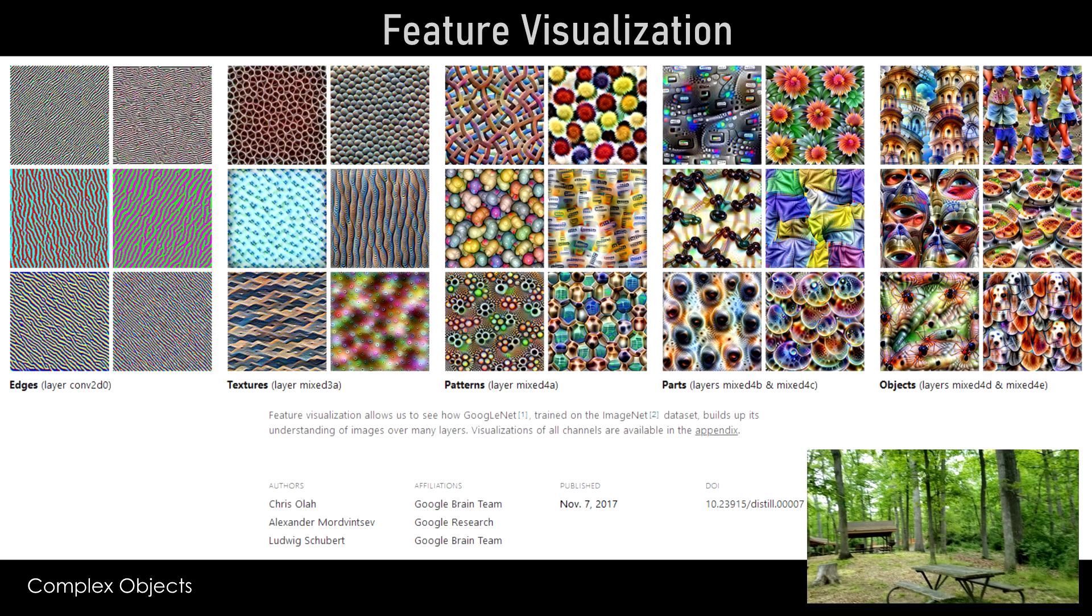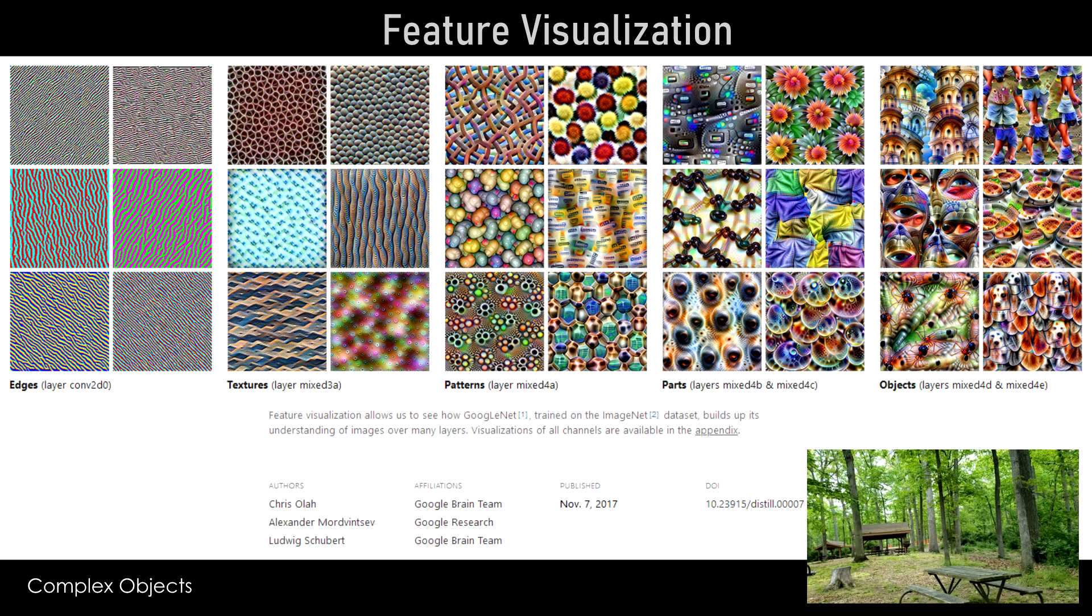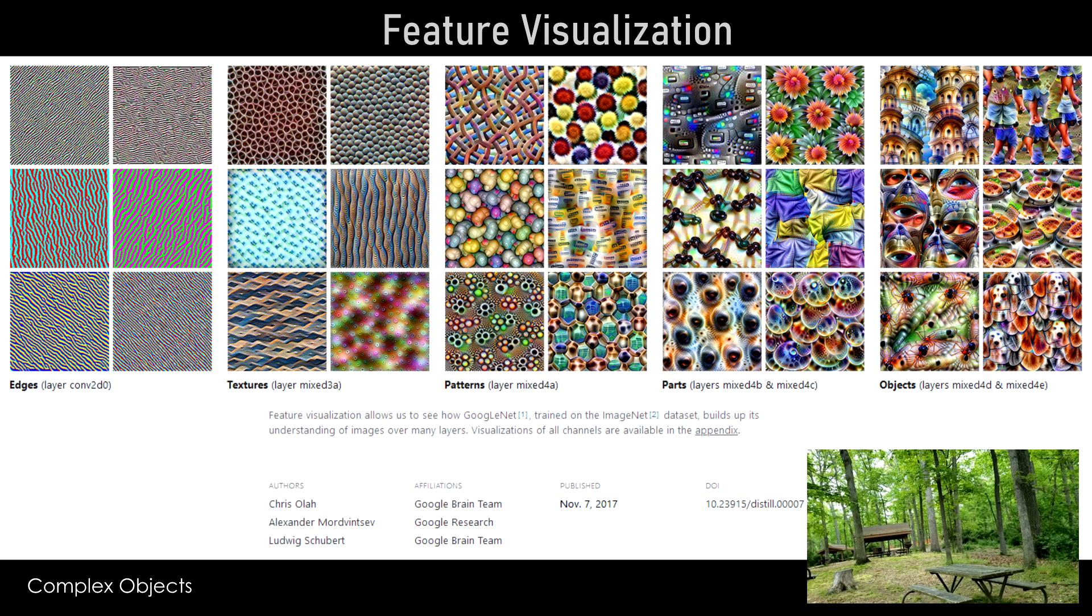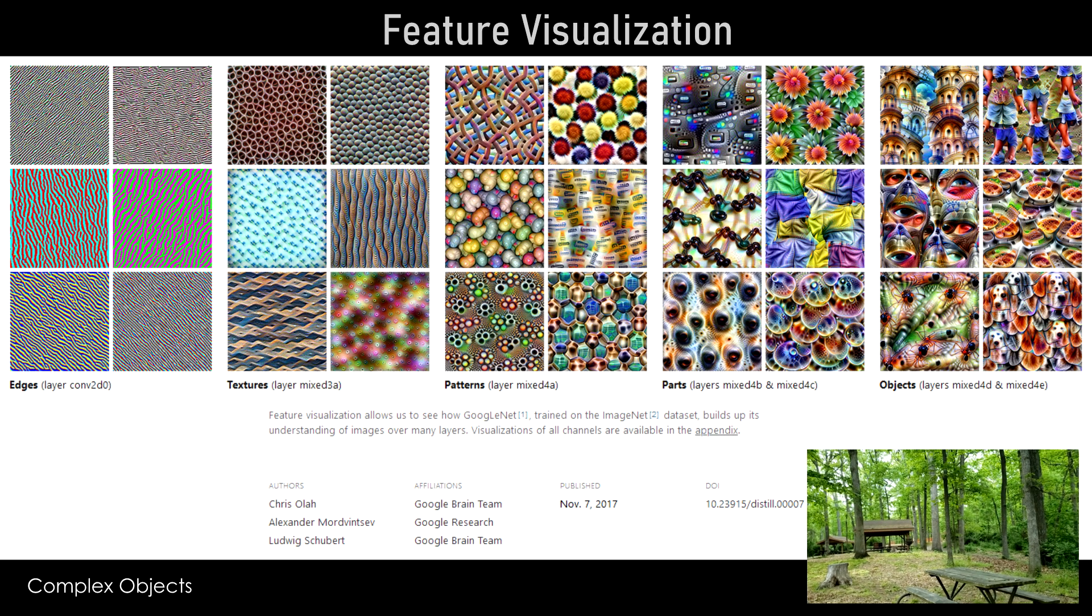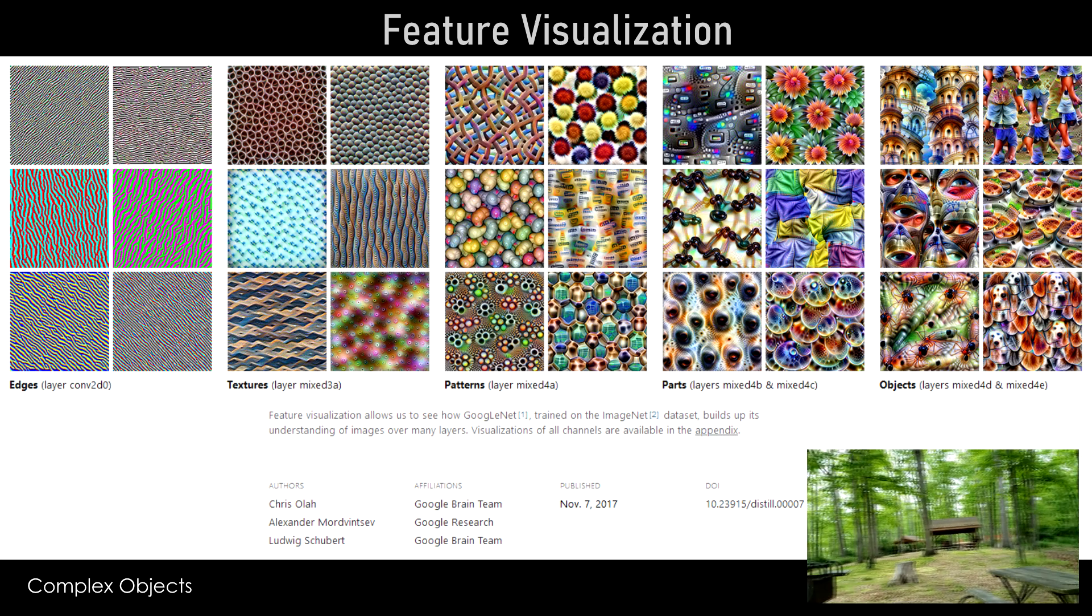Typically, we're using convolutional neural networks. Examples of this are you can visualize images that would activate a particular convolution kernel particularly strongly. That's kind of a way of generating an image.